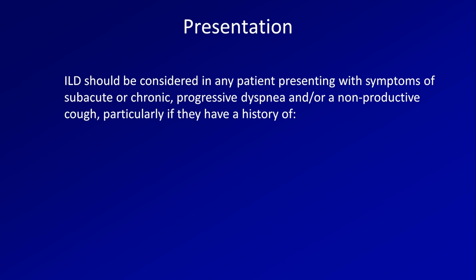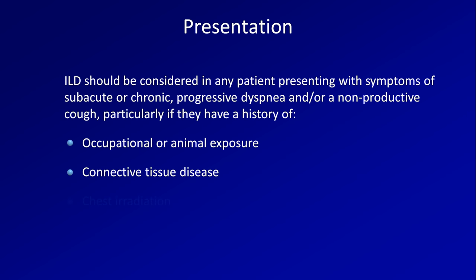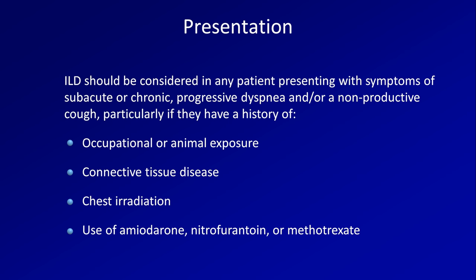Okay, so all of that terminology — that was the hard part of the video. Now let's talk presentation. ILD should be considered in any patient presenting with symptoms of subacute or chronic progressive dyspnea and/or a non-productive cough, particularly if they have a history of occupational or relevant animal exposure (which does not include dogs and cats), connective tissue disease, chest irradiation, or the use of medications such as amiodarone, nitrofurantoin, or methotrexate.